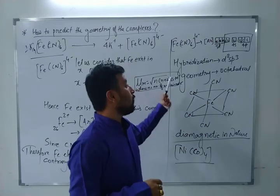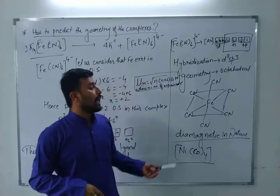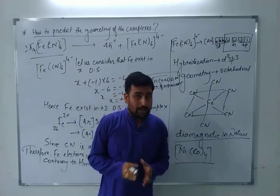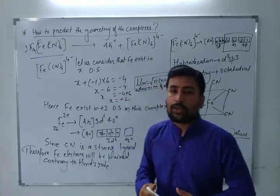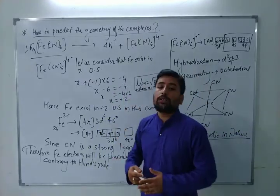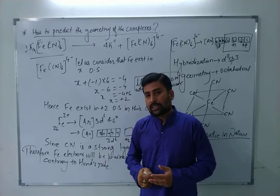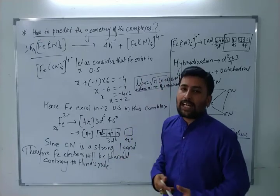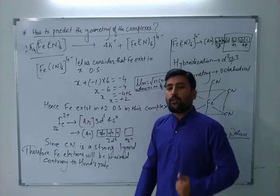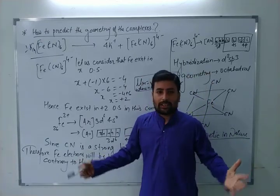When the complex is paramagnetic, there will be unpaired electrons, and you can calculate the magnetic moment value accordingly to predict the geometry of those complexes. If you have any doubts, drop them in the comment section. I hope all of you enjoyed — don't forget to like and subscribe the channel. Thank you!